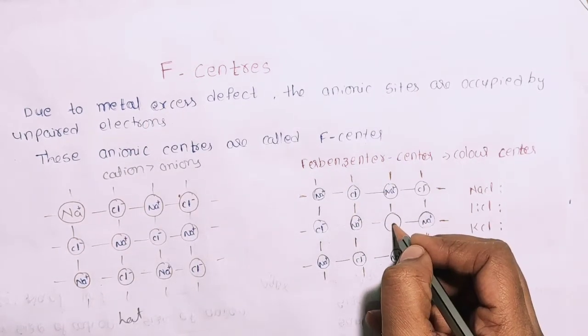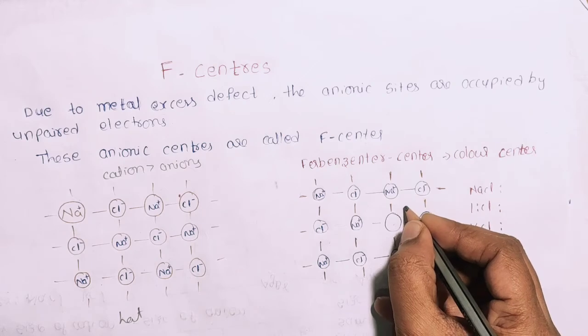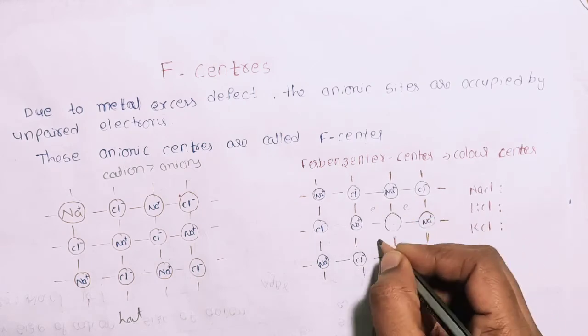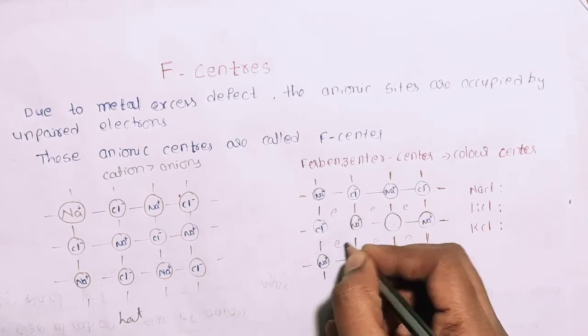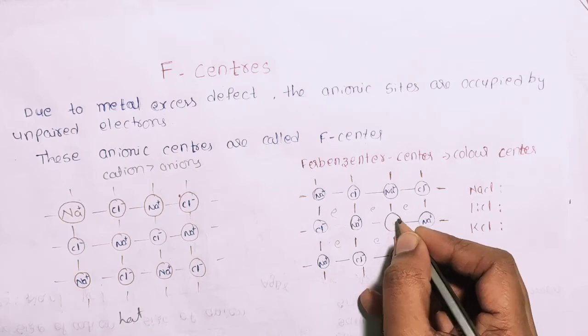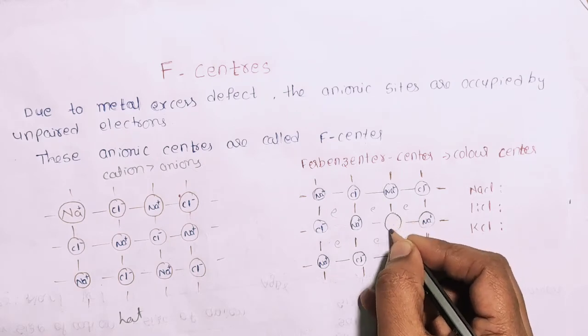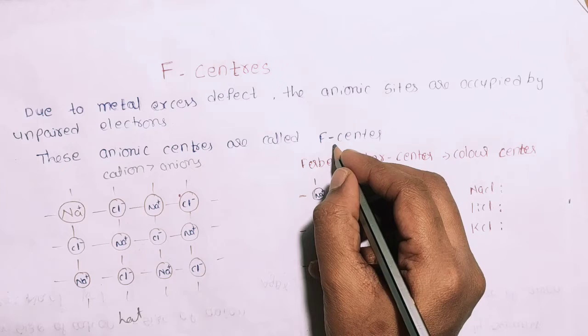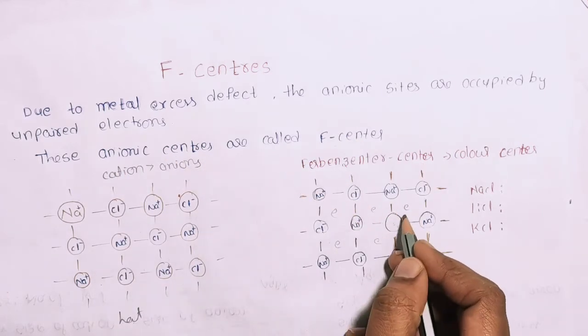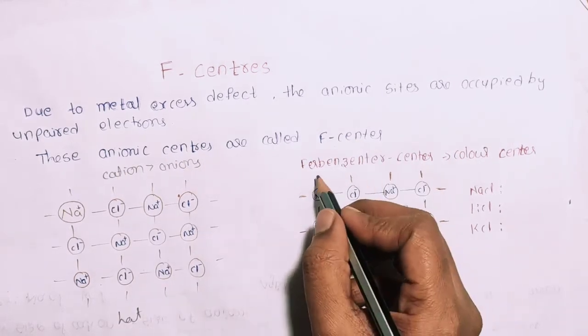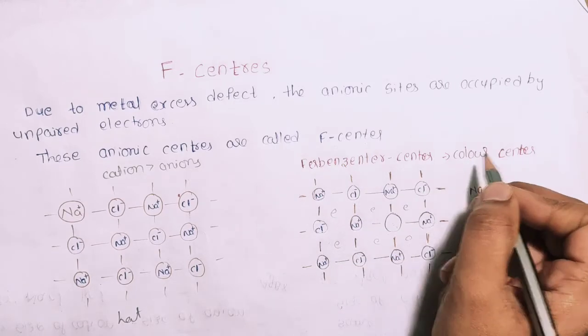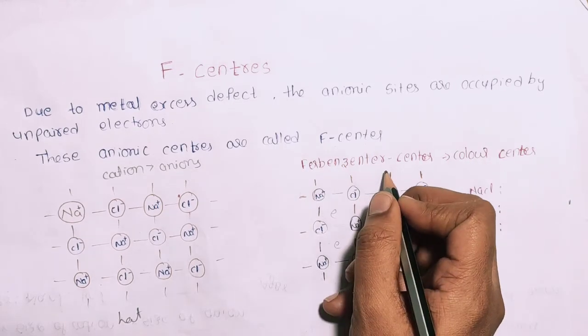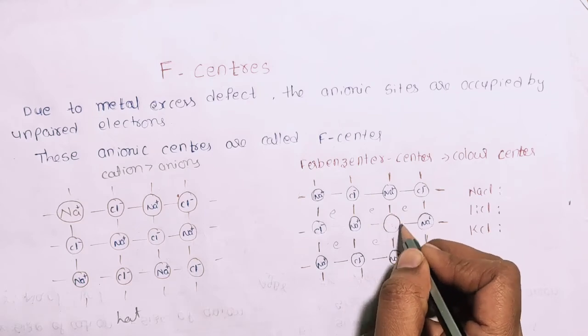The anionic side of the anionic site is on the interstitial side. There are electrons here. The center is the center. These anionic centers are called F-centers. F-center is the Furban center or color center.